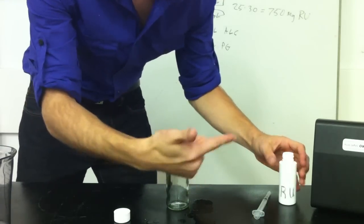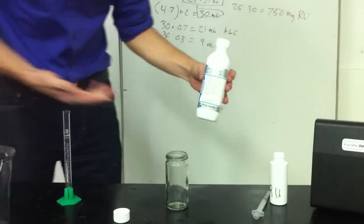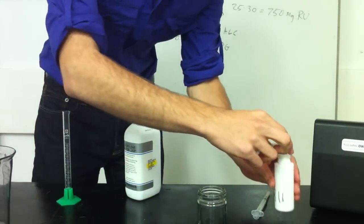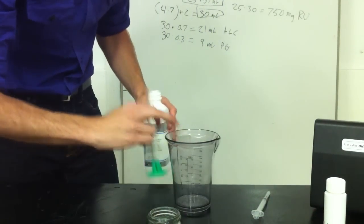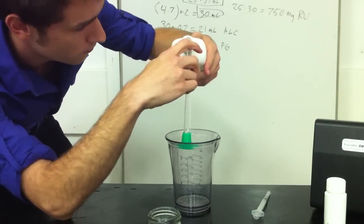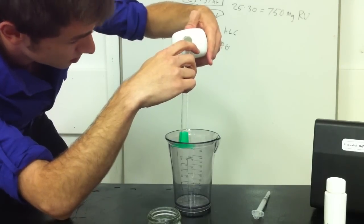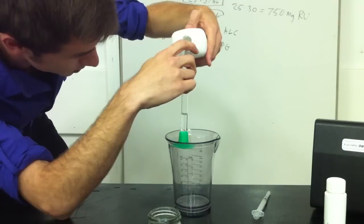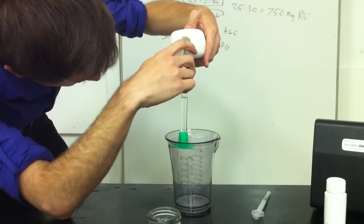So alcohol and RU is already in there. Now we need to measure out our 9 milliliters of propylene glycol. And I like to overshoot it a little bit because you know it does have a high viscosity and inevitably a lot of the propylene glycol will be left in the graduated cylinder. So I overshoot 9 a little bit, I'll do like 9 and a half.